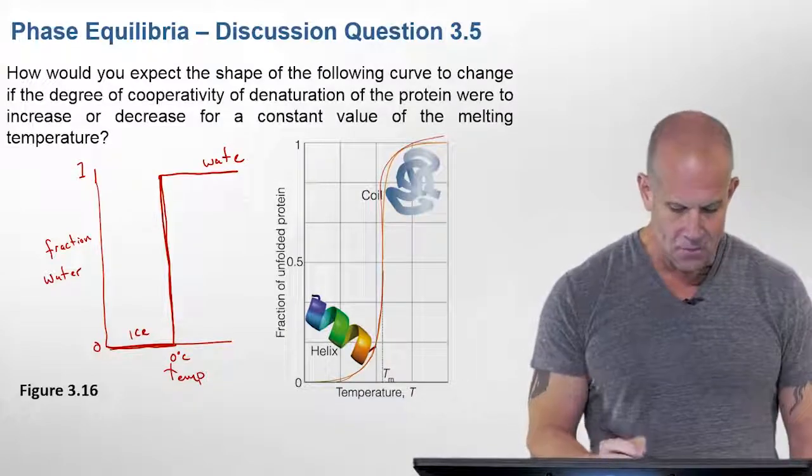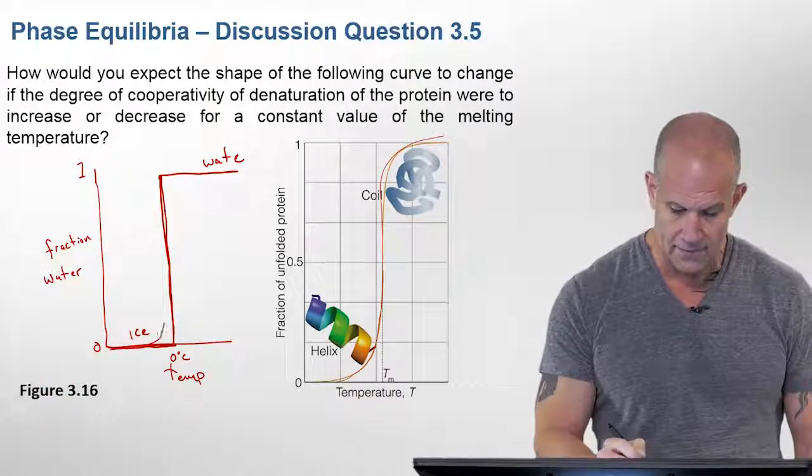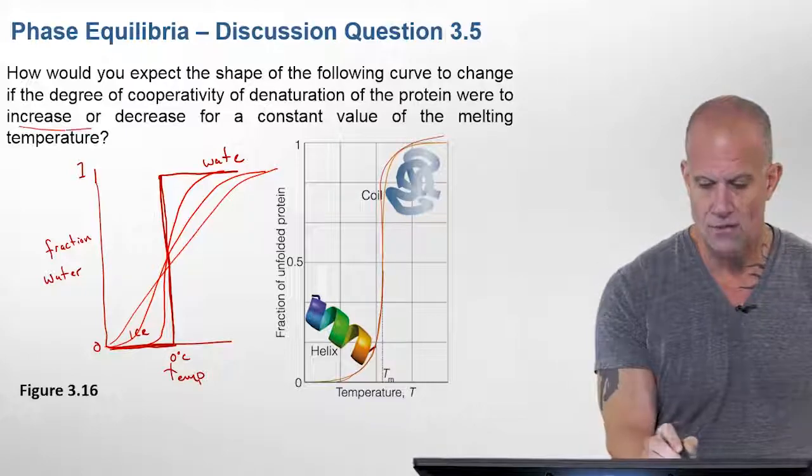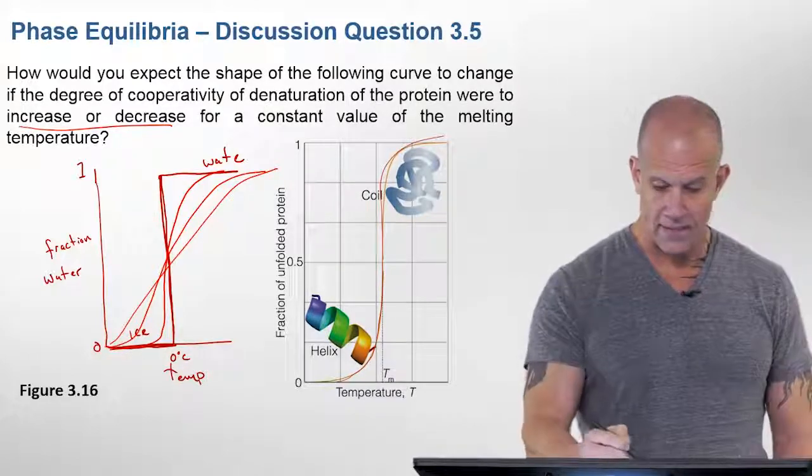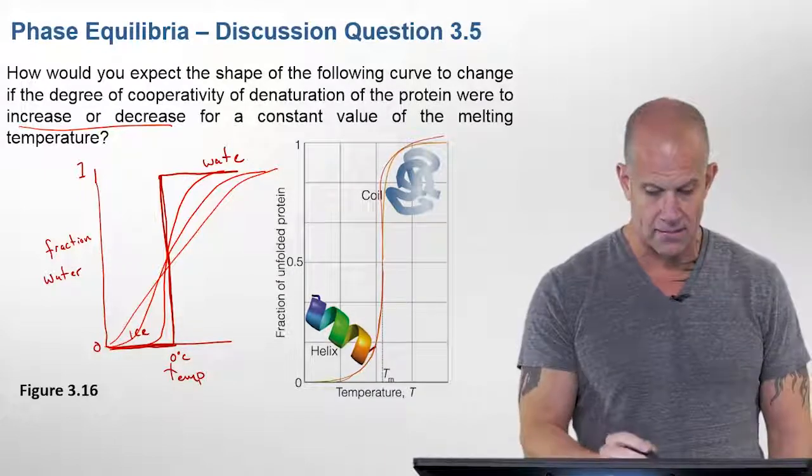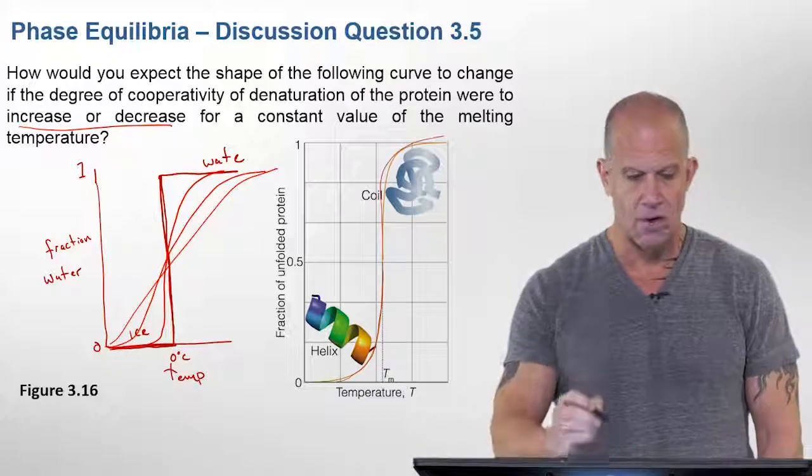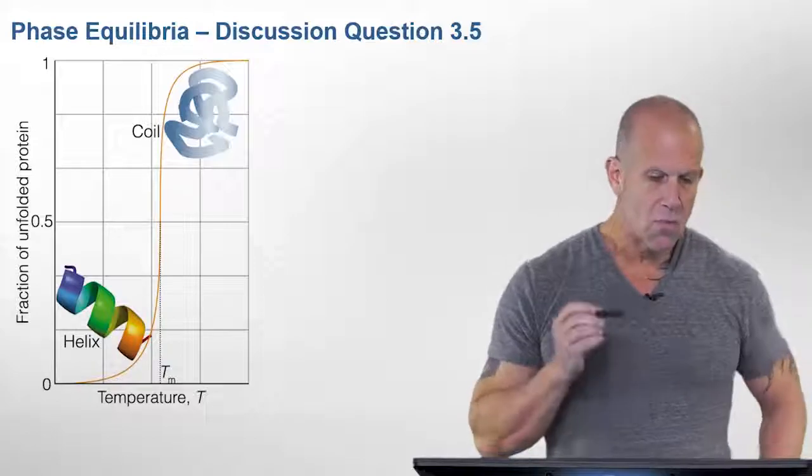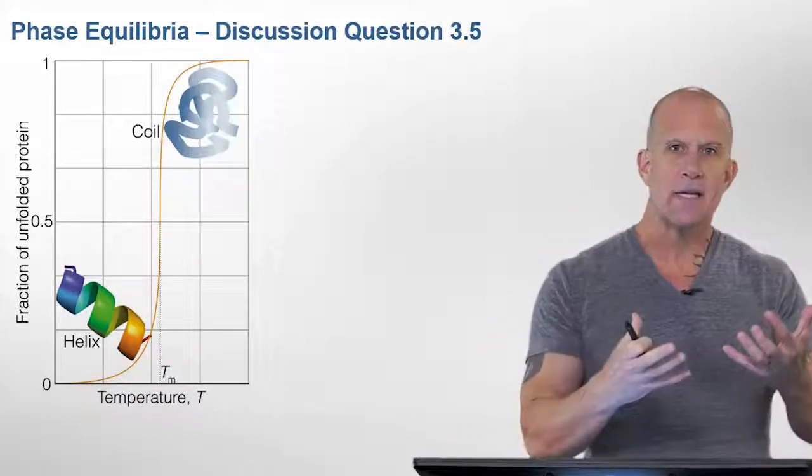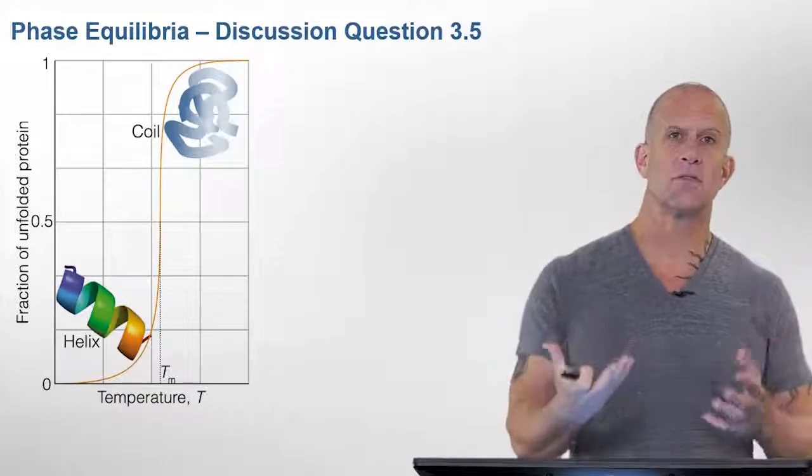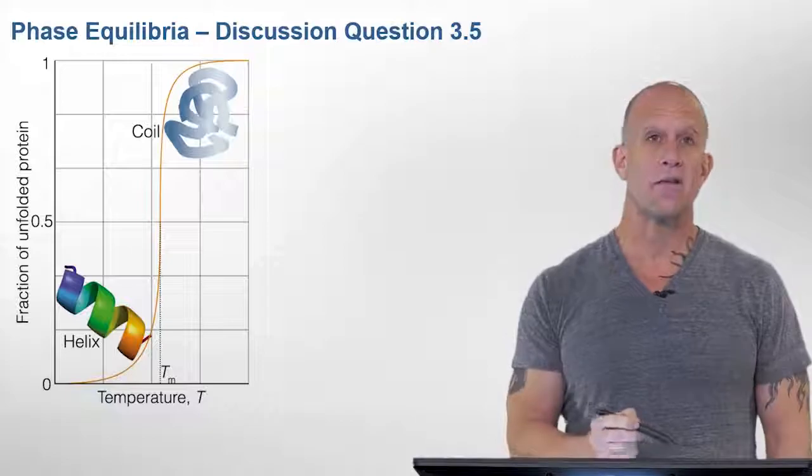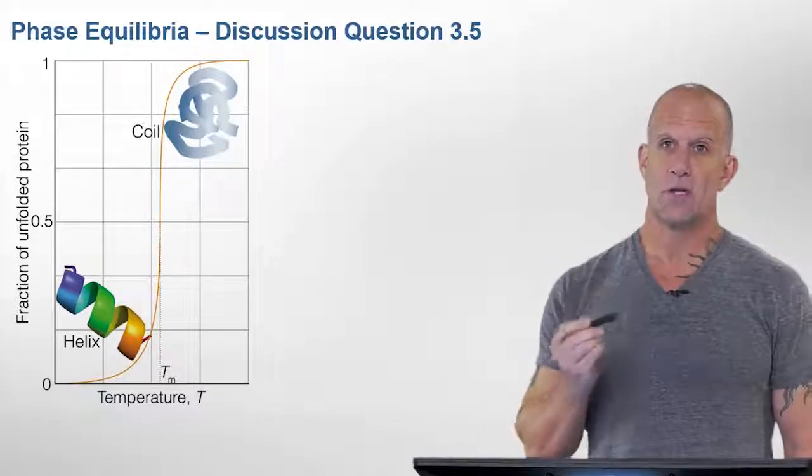And the less cooperative you get, as you decrease cooperativity, this kind of smears out more and more. And so that answers the question of if you increase the cooperativity, you increase the sharpness or the degree of cooperativity. Well, if you decrease the degree of cooperativity, then this sharpness decreases and it gets broader and broader of a transition. And so when we're looking at this specifically for proteins, this is a protein undergoing denaturization or unfolding. It's not a first order phase transition. And the degree of cooperativity can vary quite a lot. In other words, you can smear this transition out to quite an extent.